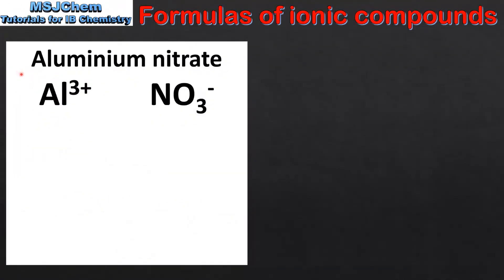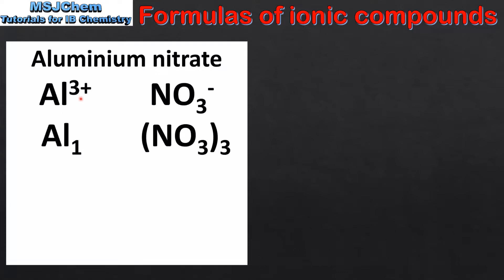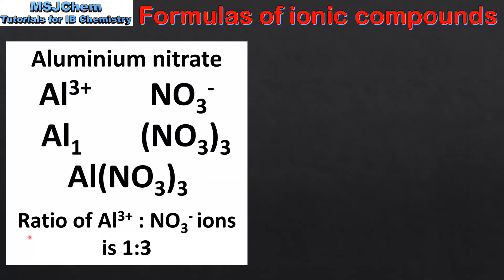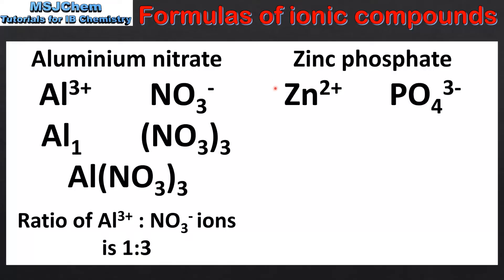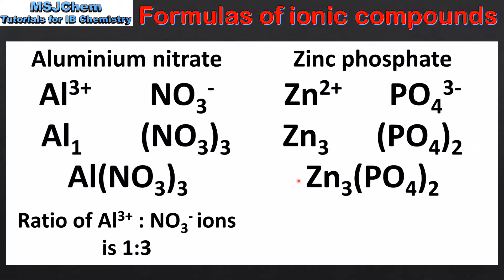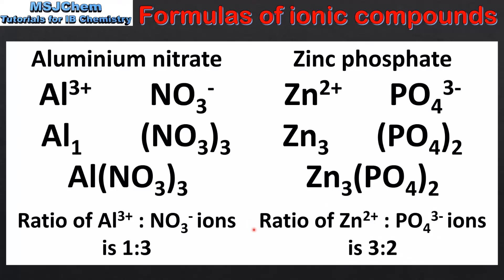Our last two examples: aluminium nitrate is composed of aluminium ions and nitrate ions. We take the 3 from the aluminium ion and write it as a subscript for the nitrate ion, and the 1 from the nitrate ion as a subscript for the aluminium. The formula is Al(NO₃)₃, giving a ratio of aluminium ions to nitrate ions of 1 to 3. Finally, zinc phosphate is composed of zinc ions and phosphate ions. We take the 2 from the zinc as a subscript for the phosphate, and the 3 from the phosphate as a subscript for the zinc. The formula is Zn₃(PO₄)₂. Note the use of brackets in both examples. The ratio of zinc ions to phosphate ions in a formula unit is 3 to 2.